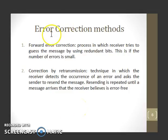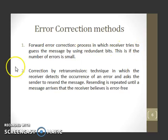There are two error correction methods: forward error correction and correction by retransmission. In forward error correction, the receiver tries to guess the message by using redundant bits. This works when the number of errors is small.